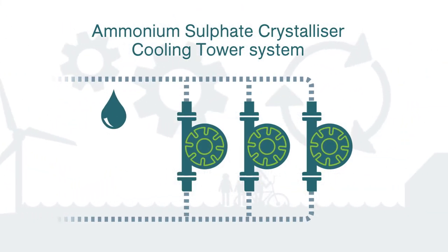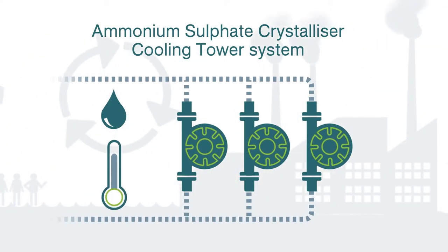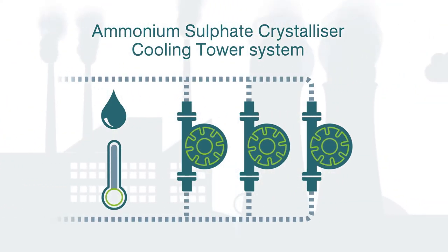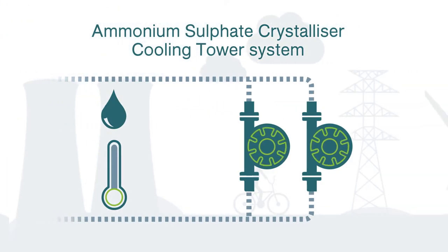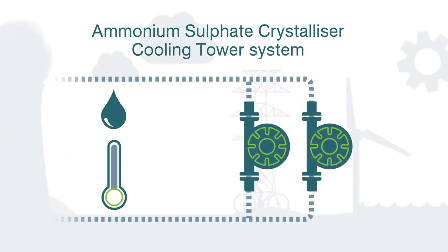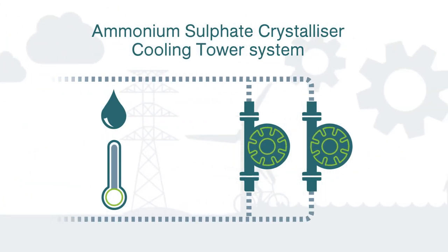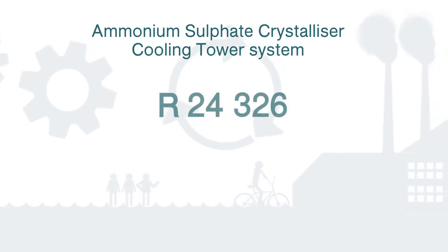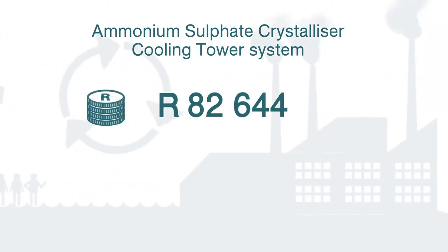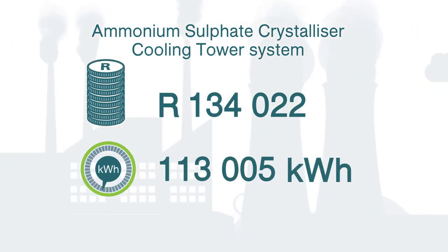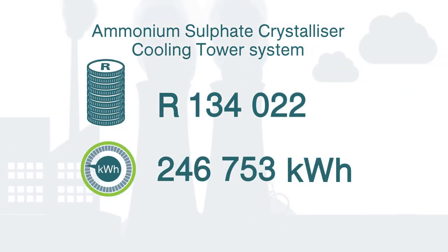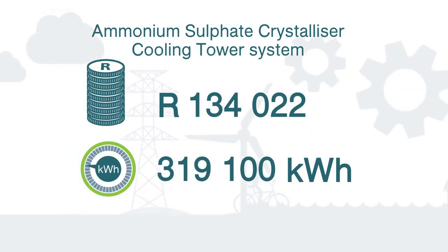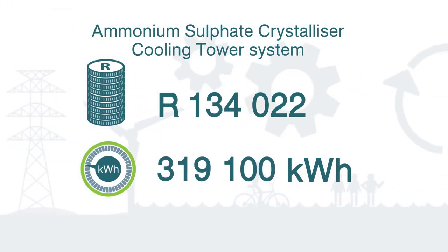Depending on the condenser demand and temperature of the cooling water, by switching off just one pump, the cooling requirements were met with no cost to the company, and a total saving of R134,022 and 319,100 kilowatt-hours per year was realized.